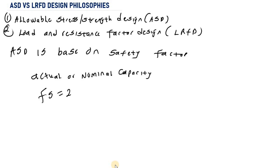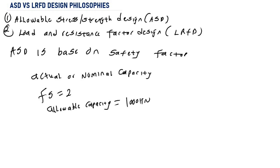When I sell the chair to a consumer, I will state the reliable capacity of the chair. Because I used a factor of safety of two, the nominal capacity of 2000 kilonewtons is reduced to 1000 kilonewtons. So the reliable capacity is 1000 kilonewtons, while the nominal capacity is 2000 kilonewtons.